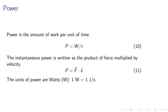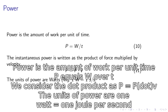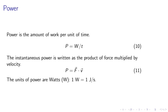Power. Power is the amount of work per unit of time, P equals W over t. The instantaneous power is written as the product of force multiplied by velocity. We consider the dot product as P equals F dot v. The units of power are watts. One watt equals 1 joule per second.